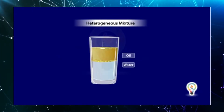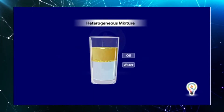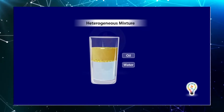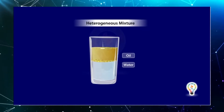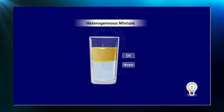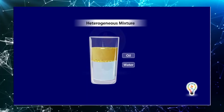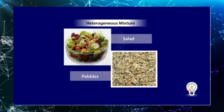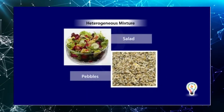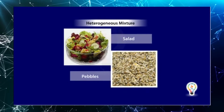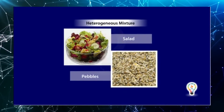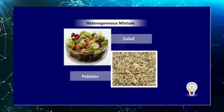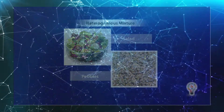The second type is a heterogeneous mixture — a mixture whose components are not soluble in each other. For example, when oil is mixed in water, it doesn't get dissolved. Other examples of heterogeneous mixtures are a mixture of sand and pebbles, salad, and so on.